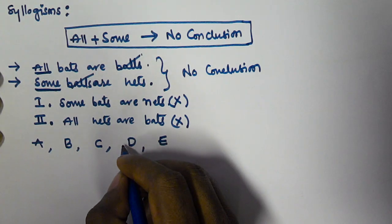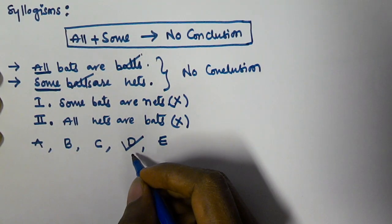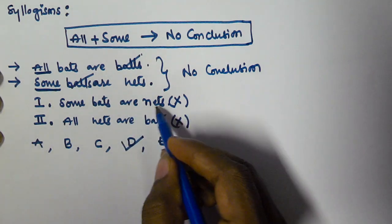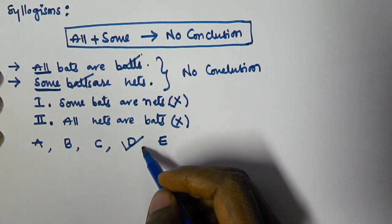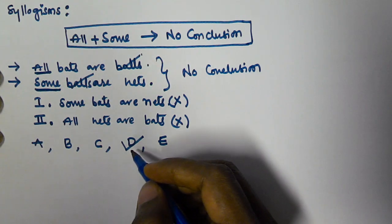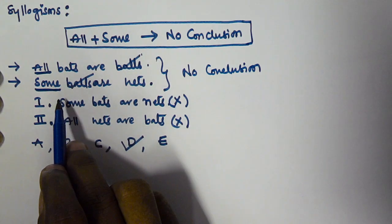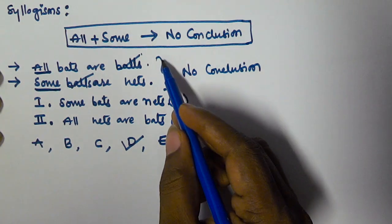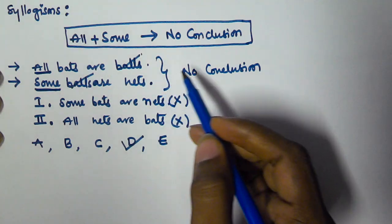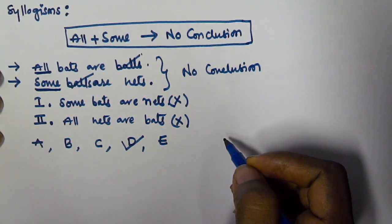So we directly select option D, which states that neither conclusion 1 nor conclusion 2 is true. Whenever you see 'All' in the first syllogism and 'Some' in the second, you can directly select D, because we cannot derive or conclude anything from the two given syllogisms. I hope you got this — thank you very much for watching and please subscribe to my channel.